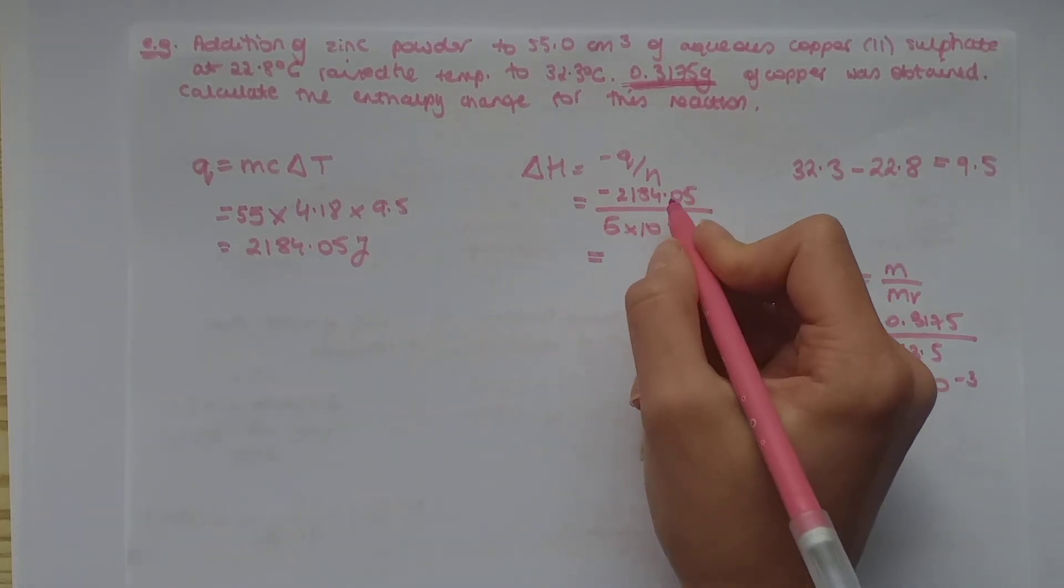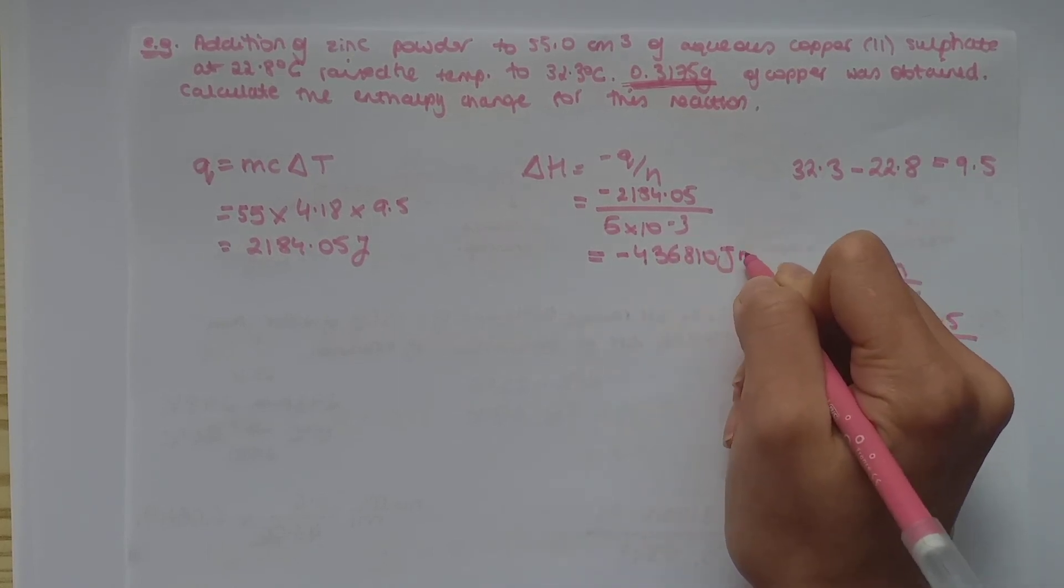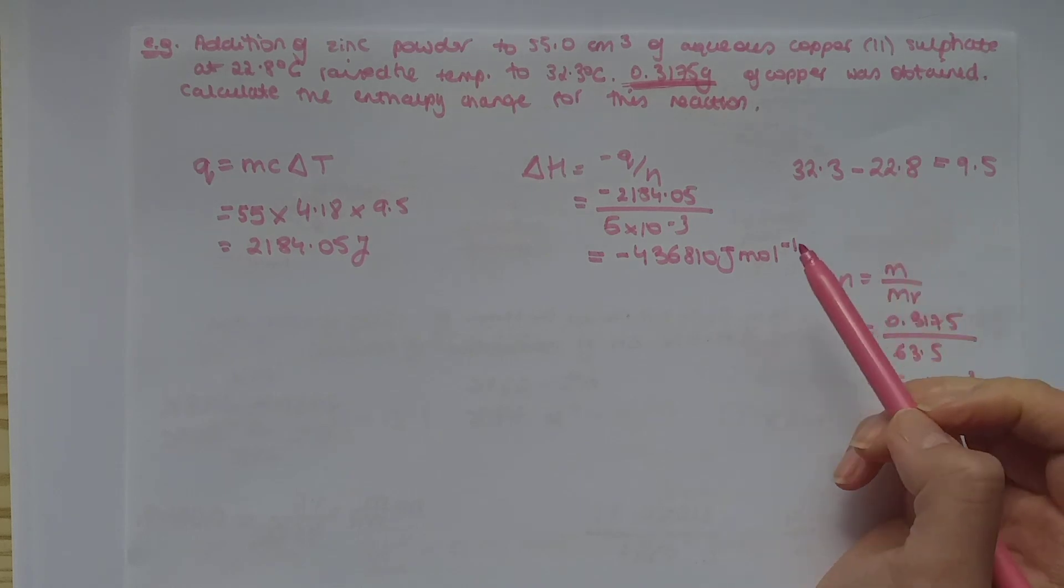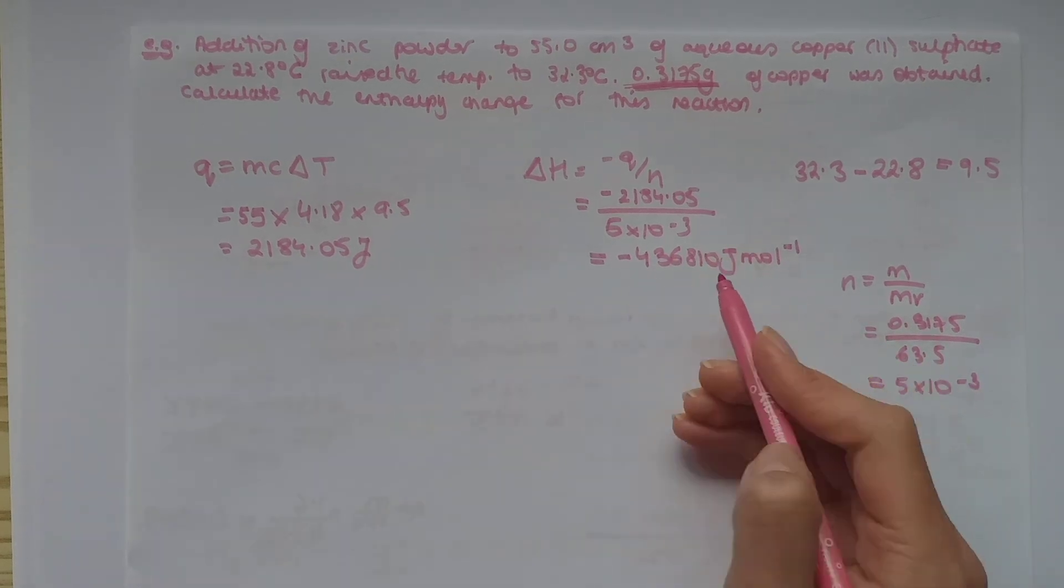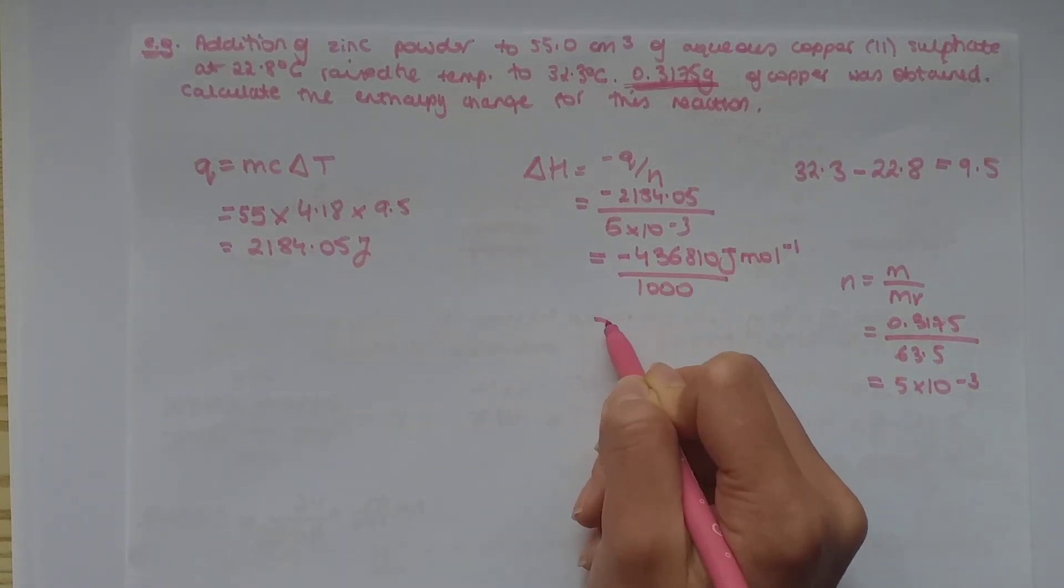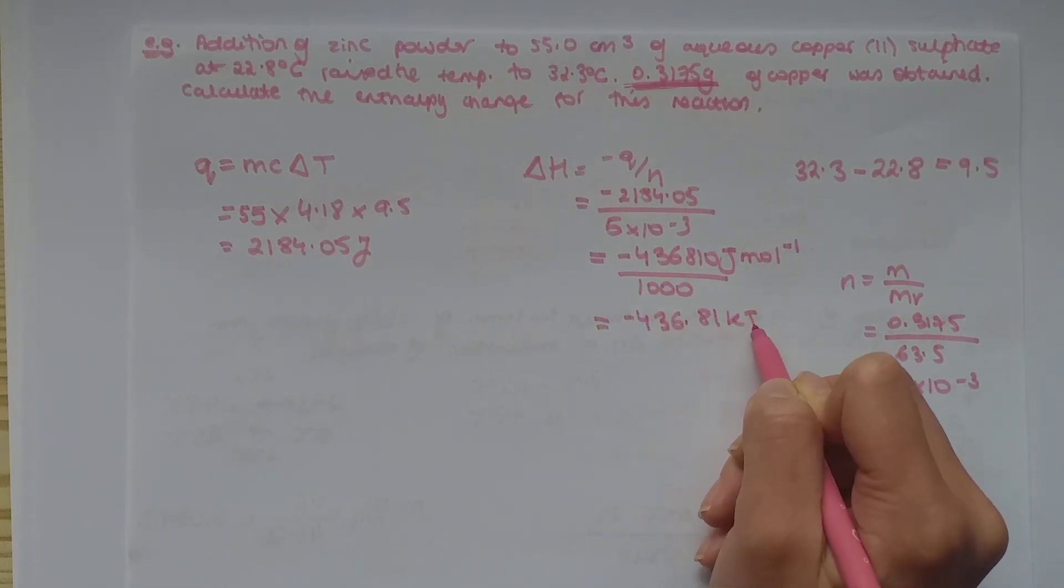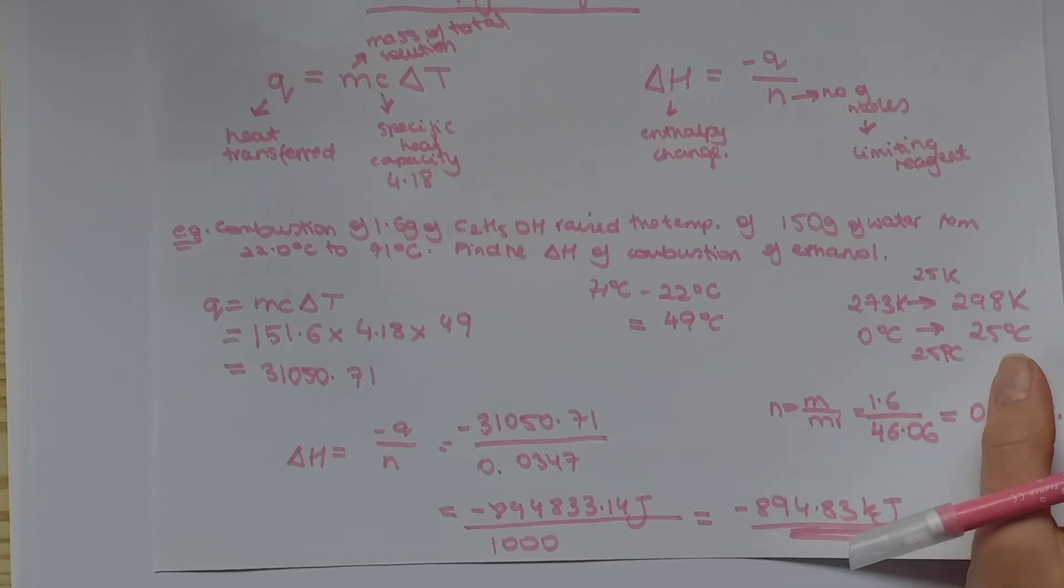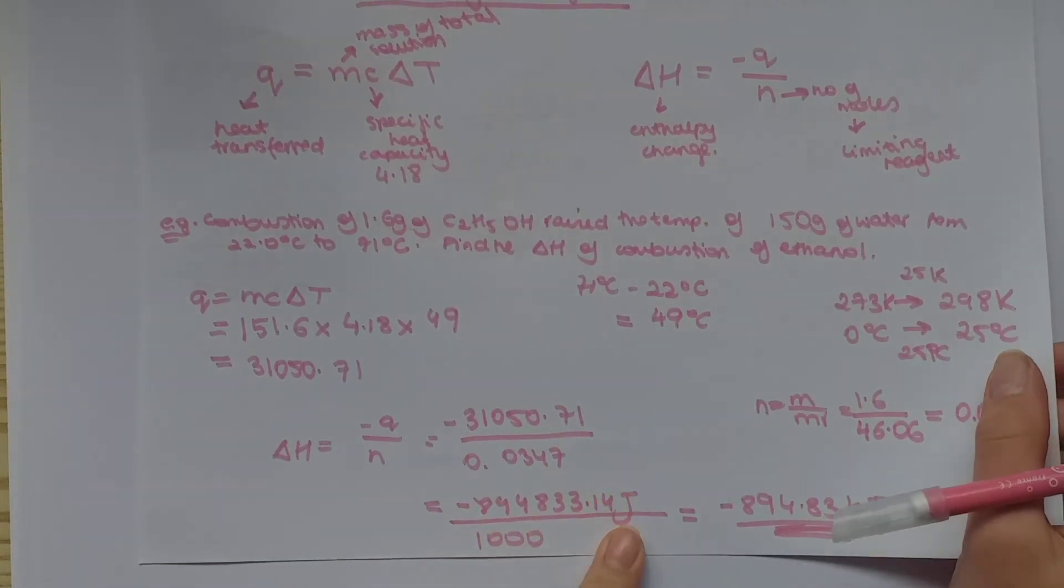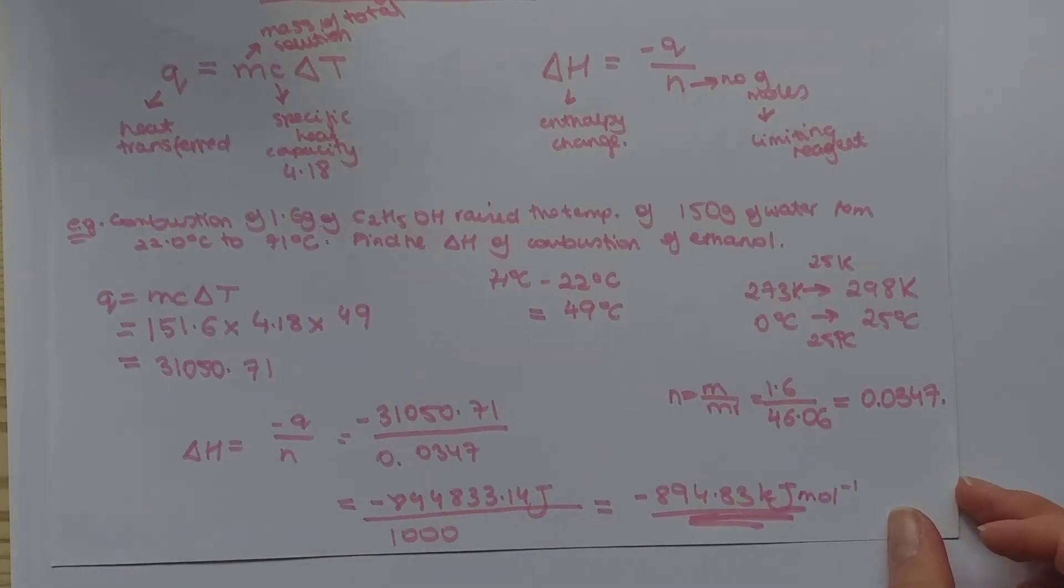And what you get is minus 436810. Again, this is a very long number. So, what you do is divide it by 1000 to get minus 436.81 kilojoules, mole minus 1. I don't want you to be confused. Therefore, I went back to the previous question. I forgot to add the mole minus 1 onto here.